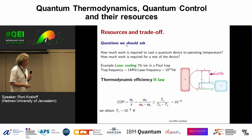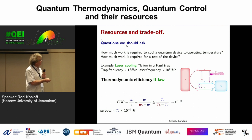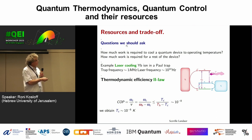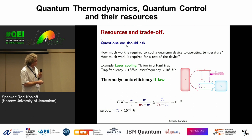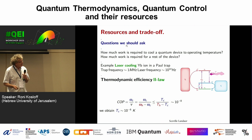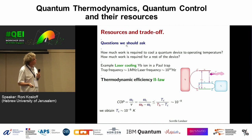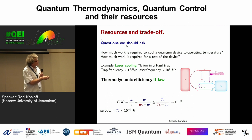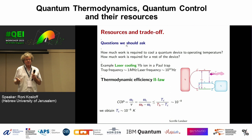Once we understand it's a heat engine, the analysis is simple. We look at the COP — the coefficient of performance — which tells us how much heat we extract relative to the resources we put in. It's always smaller than Carnot efficiency. For a ytterbium ion in a Paul trap at one megahertz frequency with emission at 10^14 Hz, we get an efficiency of 10^-8. This means we need a lot of photons — a lot of energy — to cool it to operating temperature.